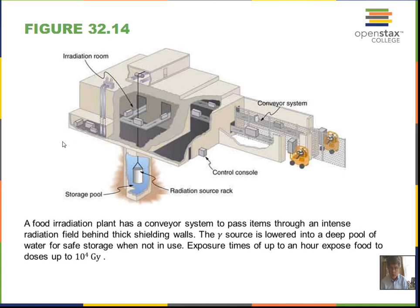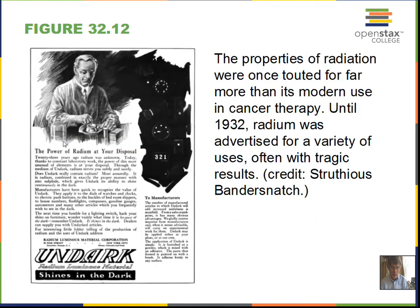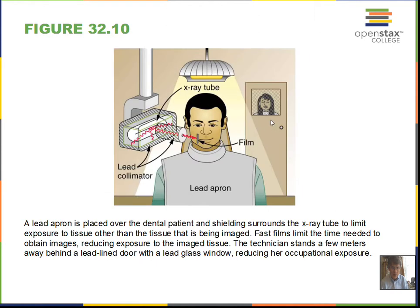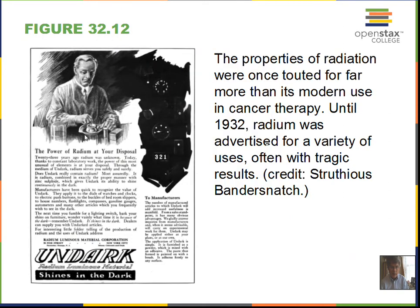How can you lower your dose from a radiation source? The x-ray technician demonstrates: first, stand behind shielding — putting dense material between yourself and the source limits exposure. Second, maximize your distance from the source. Third, minimize the time spent near the source. These three strategies — shielding, distance, and time — are the key ways to reduce radiation exposure.